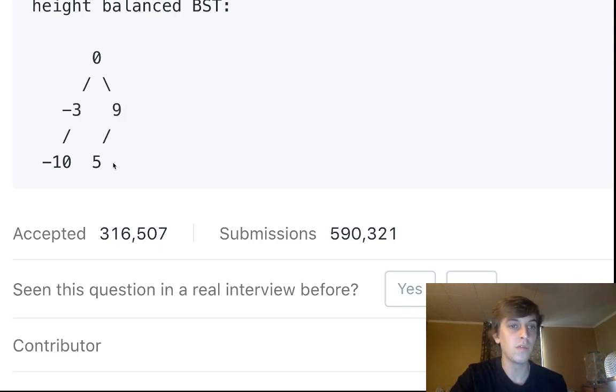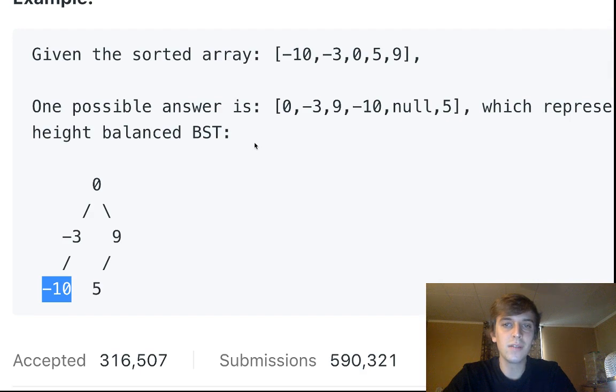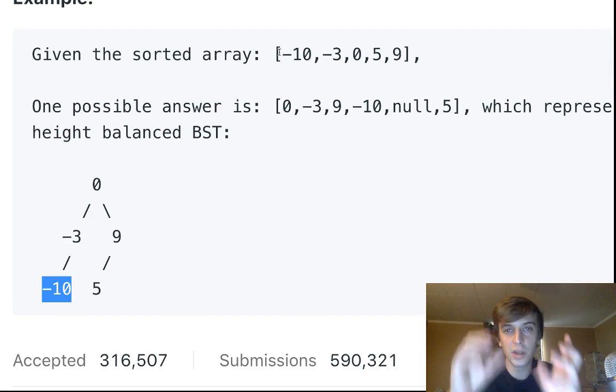So you can see here we have 0 is the root because it's in the middle of all these elements in the sorted array. We have 0, and then we have negative 3 because it's less than 0 on the left. 9 is greater than 0, and it's on the right. And then 5 is to the right of negative 3 and to the right of 0, but it's to the left of 9. So it's kind of sorted. The leftmost elements are going to be the smallest elements, rightmost are going to be the greatest elements.